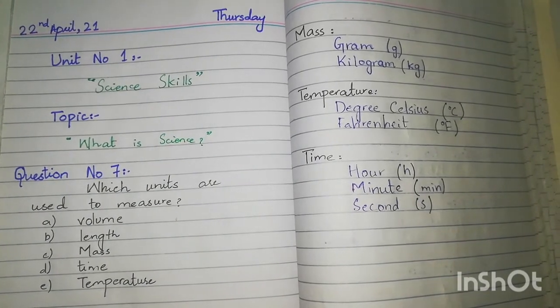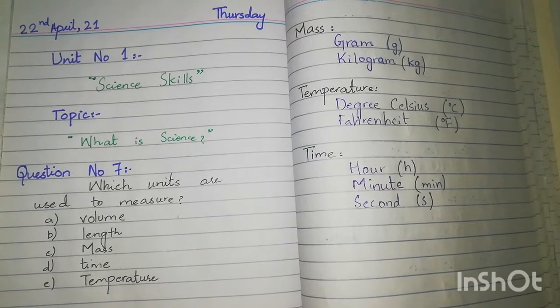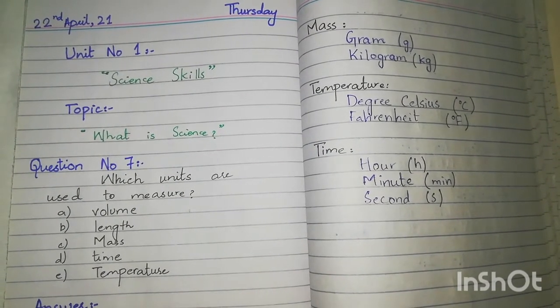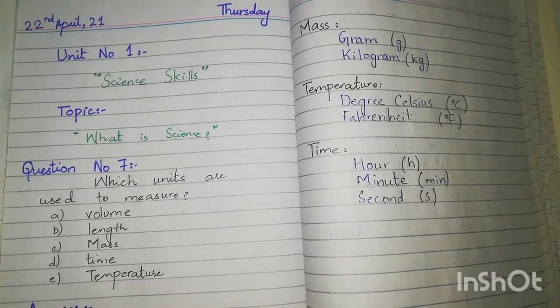Aaj humara question number 7. Homare paas which units are used to measure volume, length, mass, temperature and time. Thik hai ke koon koon se units hom use karthay hai in quantities ko measure karne ke liye.